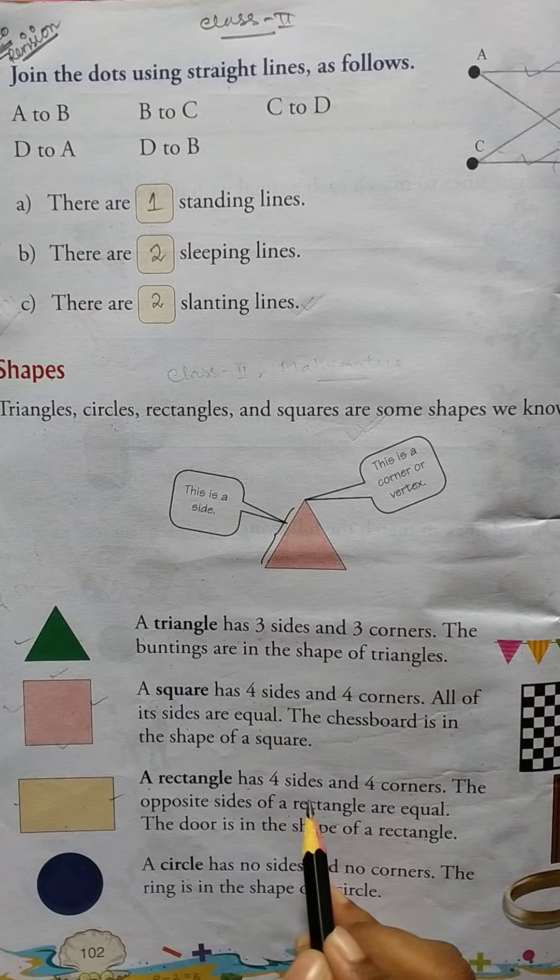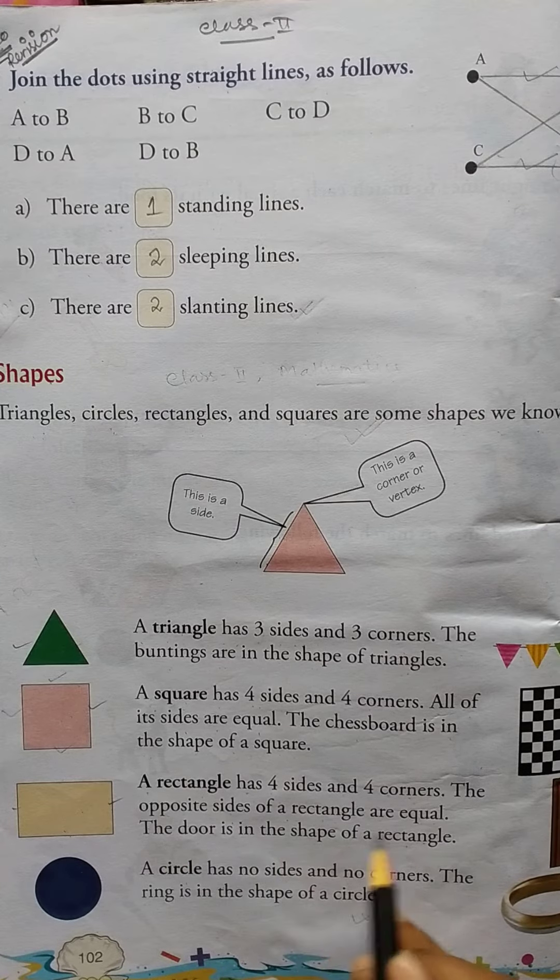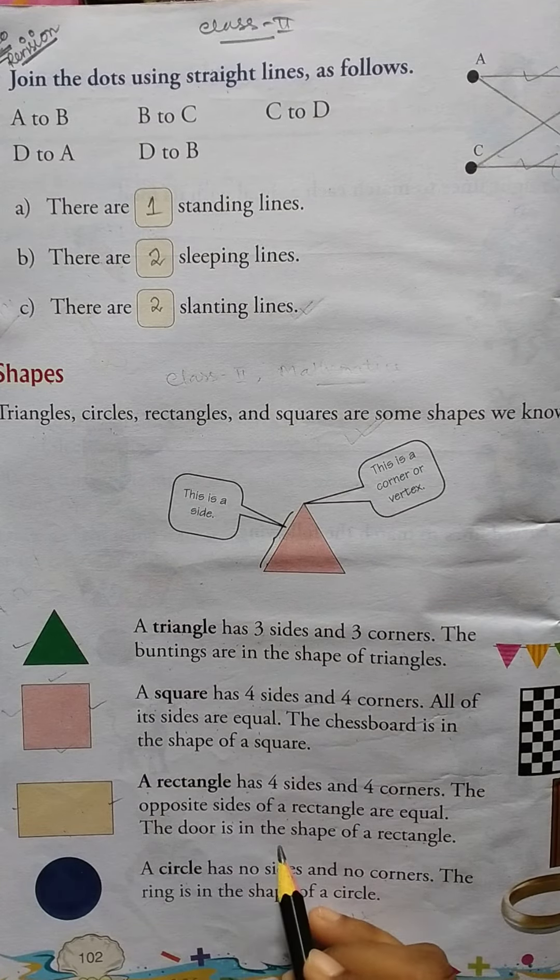Okay, then a rectangle. A rectangle has four sides and four corners. The opposite sides of a rectangle are equal. The door is in the shape of a rectangle.